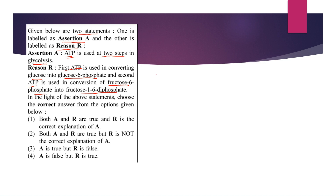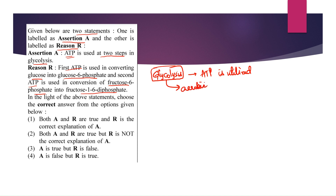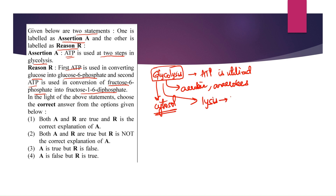The assertion tells us that during glycolysis, ATP is utilized at two steps. Glycolysis is one of the steps during respiration. It occurs in both aerobic and anaerobic organisms and is independent of oxygen. It occurs in both aerobes and anaerobes, and it takes place in the cytosol or cytoplasm. Glycolysis means lysis — breakdown of glucose.